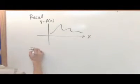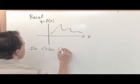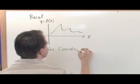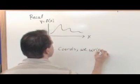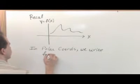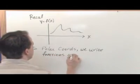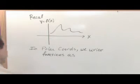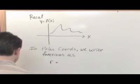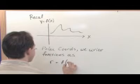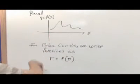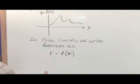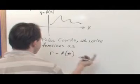In polar coordinates, we write functions as follows. Instead of y equals f of x, we say that r is equal to some function of theta. You see the analogy is direct here. Instead of y, the other coordinate being a function of x, we say that r, which is one of the coordinates in the polar representation, is a function of the other coordinate, theta.